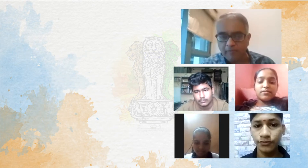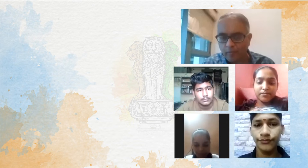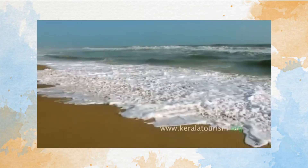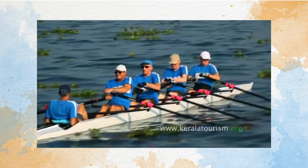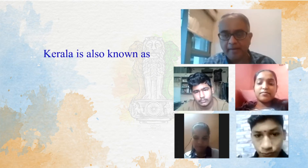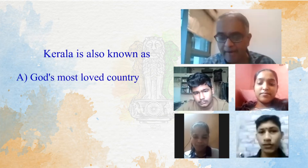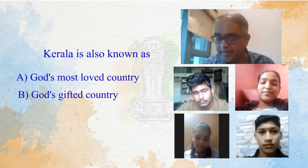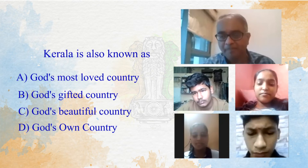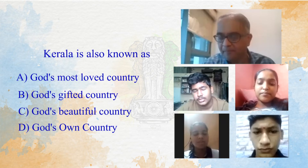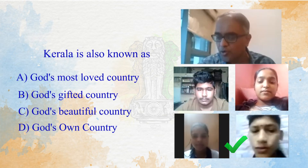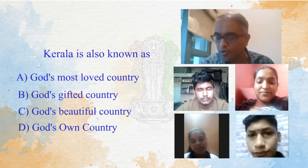We move on to the third question, again a video clip, for team Swaraj — Twinkle and Sahil. What you're seeing is a tourism ad for Kerala. The question is: what is the tagline when they promote Kerala? Is it 'God's most loved country', 'most gifted country', 'most beautiful country', or 'God's own country'? Sahil answered: the last option, God's own country. Correct — you get 10 points.